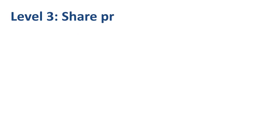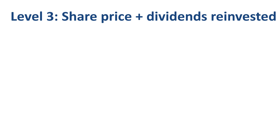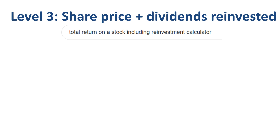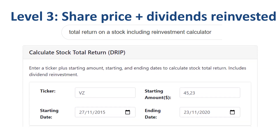We can further improve the accuracy of our calculation by looking at the share price gain and dividends reinvested. This requires either a more extended spreadsheet or the use of an online tool. If you type 'total return on a stock calculator' into a search engine, you will get to a screen where you can input the ticker symbol — in our case VZ for Verizon — the starting amount, in our case one share bought at $45.23, and the starting and ending dates of the period for which you want to calculate total shareholders' returns.